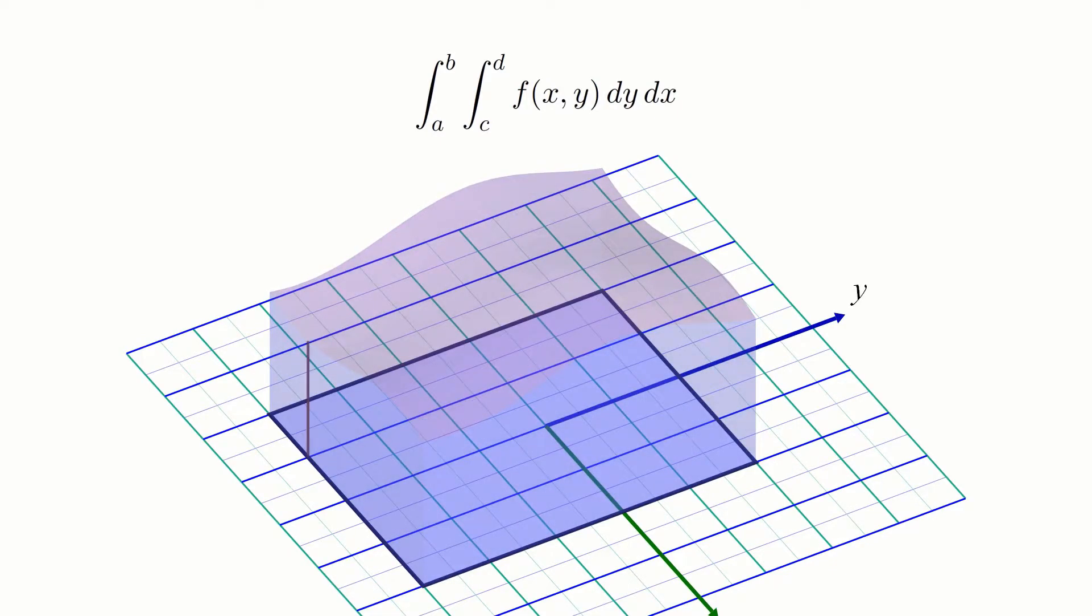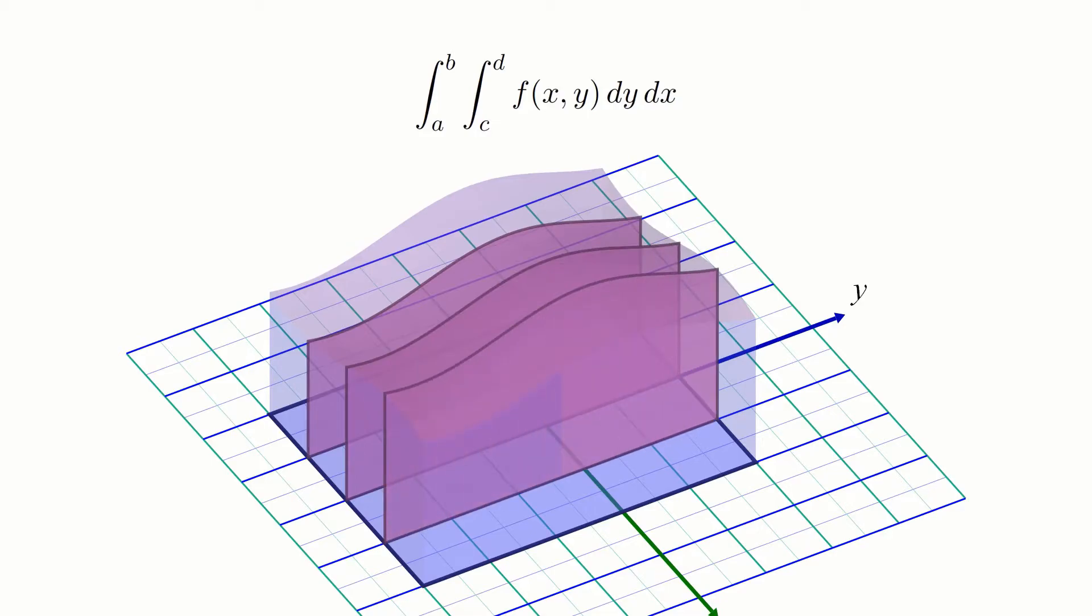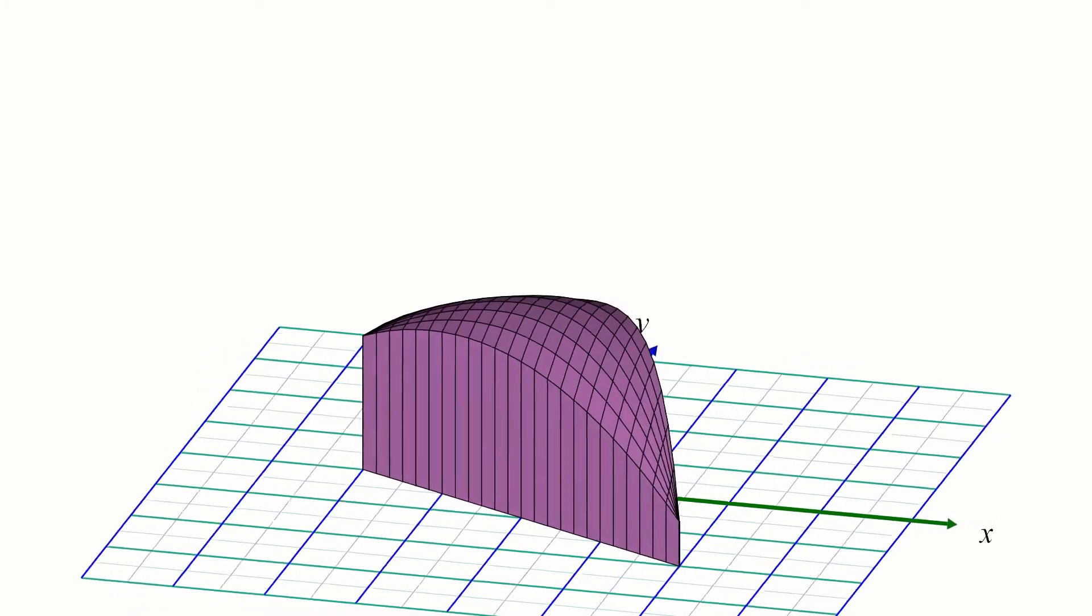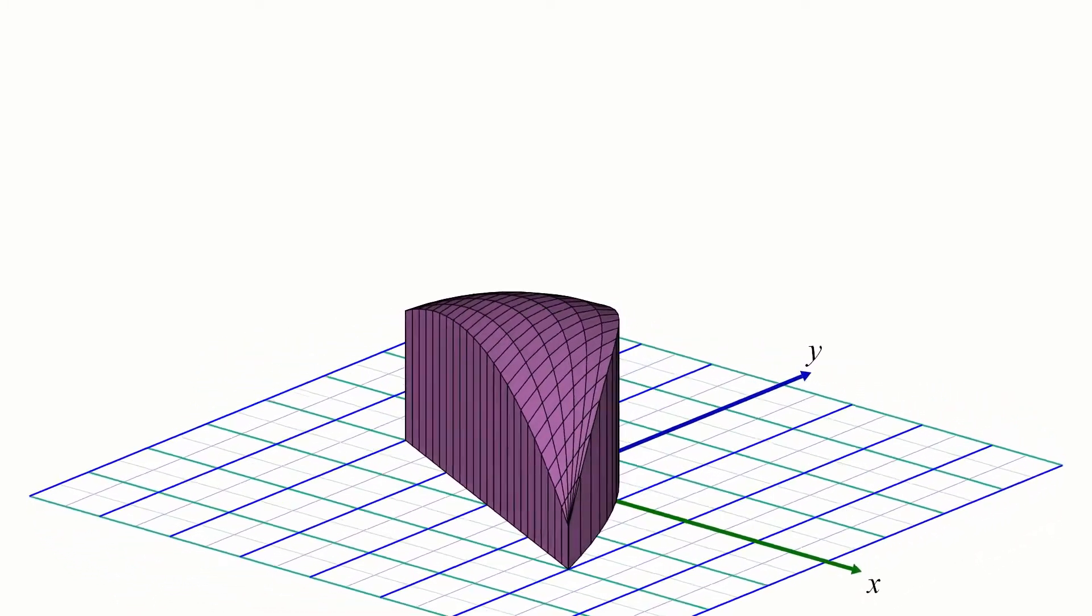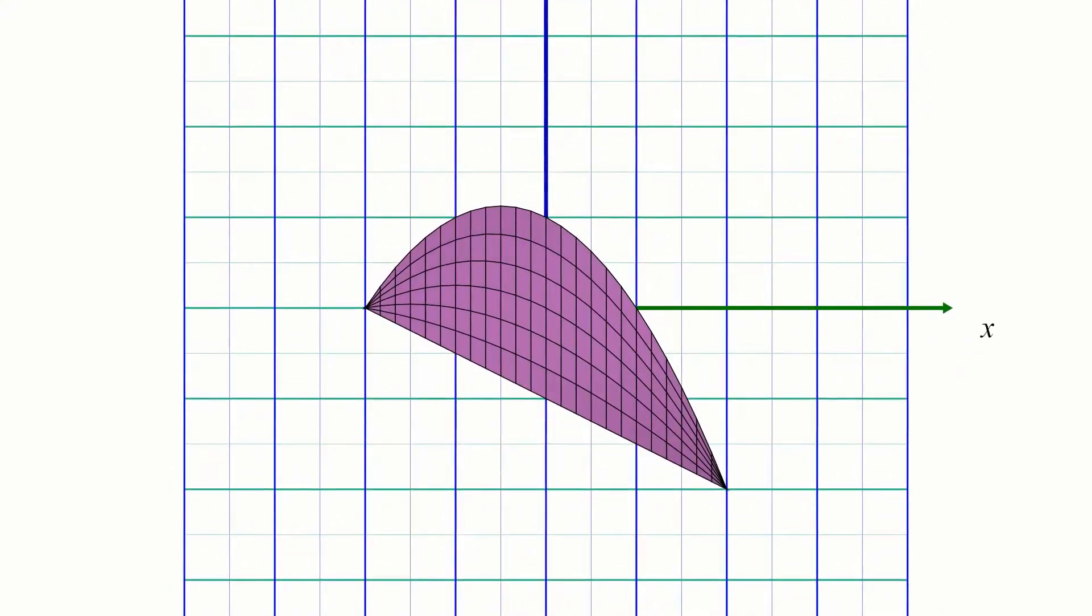This is because the two-dimensional slices the inner integral produces all have the same extents, y equals negative 3 and y equals 2 in this case. But what if you want to find the volume of a solid whose base isn't just a simple rectangle? Take, for example, this solid. Its base in the xy-plane is the region bounded by a line segment on the bottom and a parabola on top. How do we set up a double integral here?